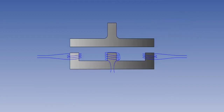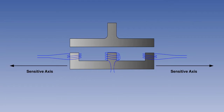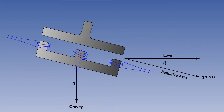Exactly the same problem applies to an accelerometer. It's designed to sense lateral accelerations when it's on the level. There is no problem because g, the gravity vector, is at 90 degrees to the sensitive axis and so is not sensed by it. However, if the accelerometer is on the tilt by an angle of, say, theta, the sensitive axis will pick up a component of gravity of g sin theta, even if the aircraft is on chocks and not going anywhere.